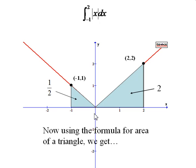Now using the formula for area of a triangle, 1 half base times height, we get the area of this left triangle is 1 half. The area of this right triangle is 2.